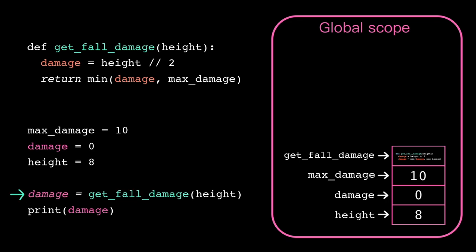When we exit out of that function call, we're back in global scope, so we can store that return value.